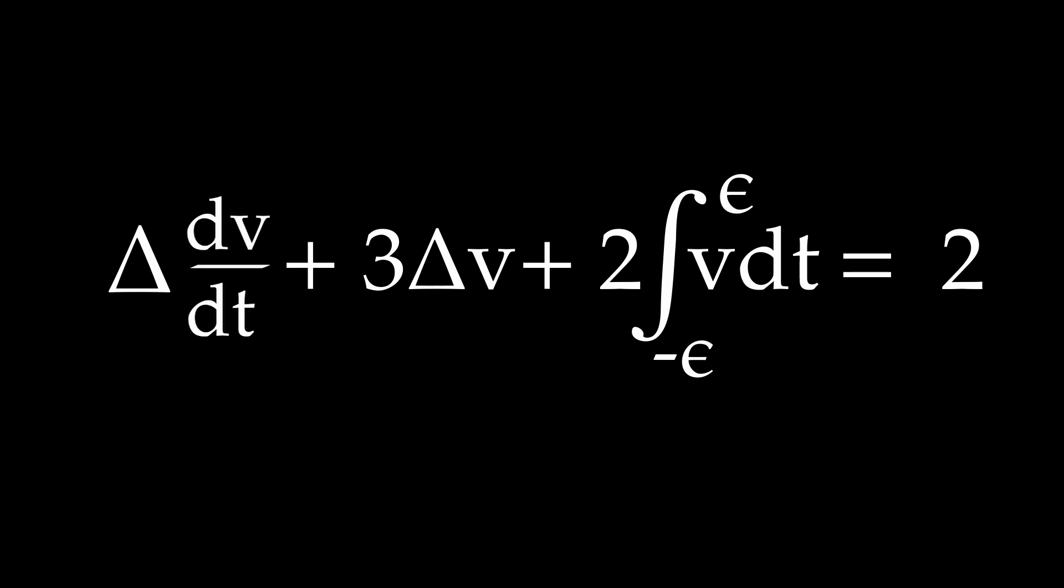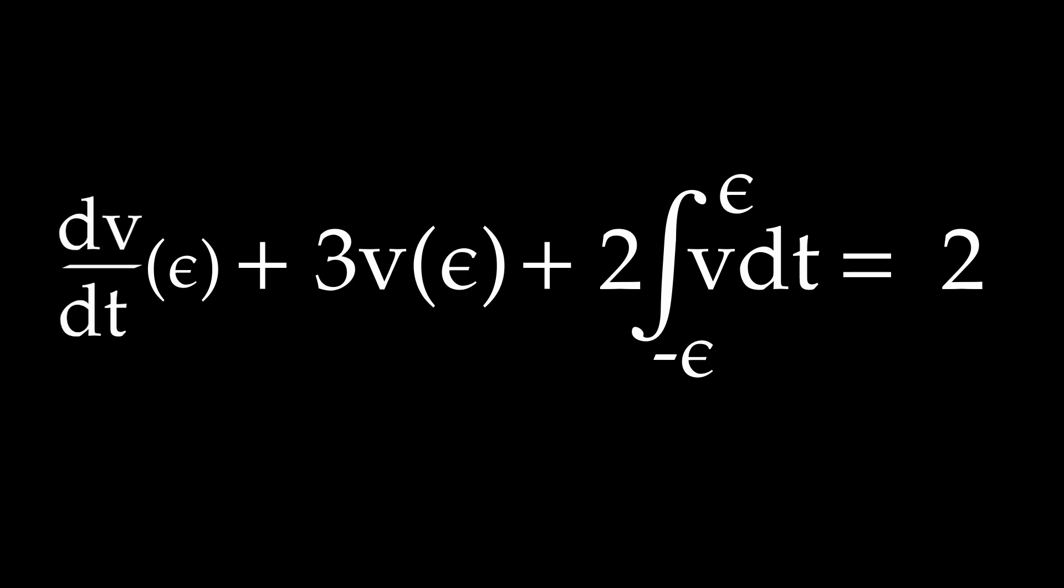You might think that I've made the problem way harder and didn't do anything useful. But if you think about it, before t equals 0, v and its derivative was just 0, so these terms die off. And since we let epsilon get very small, this integral of v must eventually also die off.